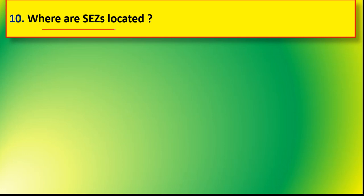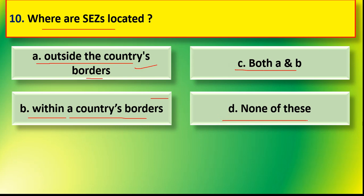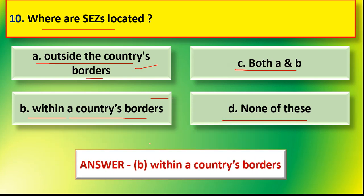Next question: where are special economic zones located? Options are option A outside the country's border, option B within a country's border, option C both A and B, or option D none of these. The correct answer is option B — all special economic zones are located within a country's border.